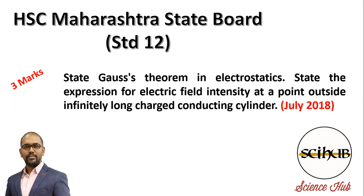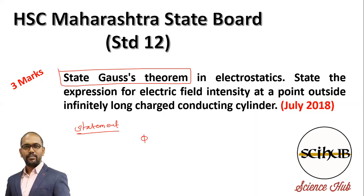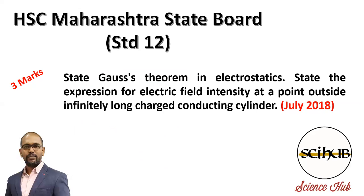We already learned Gauss's theorem in the previous question, but let me state it again. The statement of Gauss's theorem is: electric flux over a closed surface is equal to one by epsilon zero times the total charge enclosed by the surface. We can write: total electric flux equals q by epsilon zero.